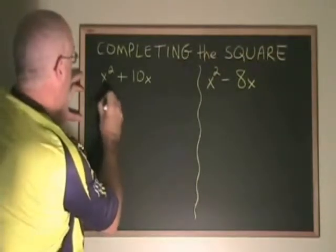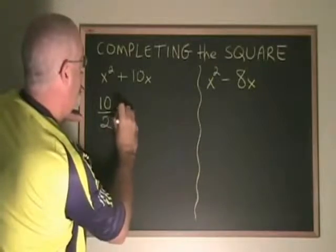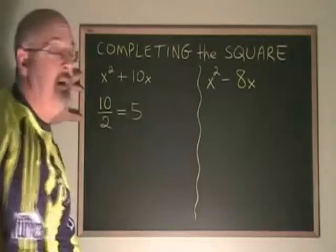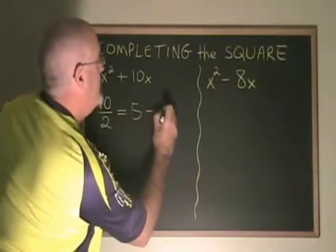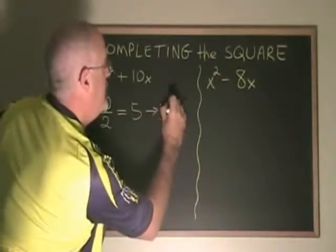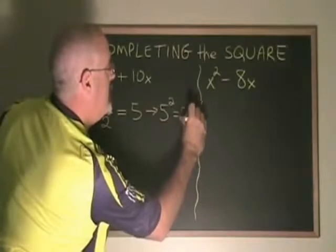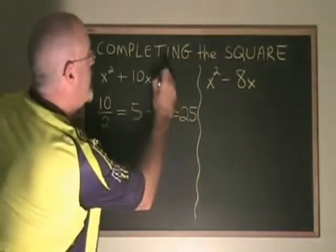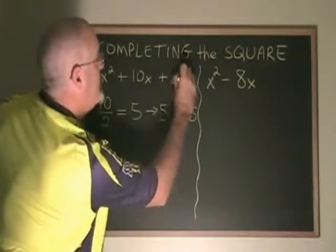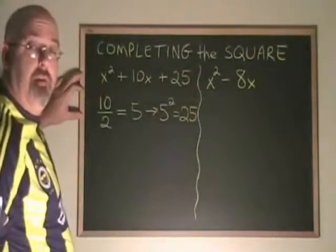If I take the coefficient of x, which in this case is 10, and I divide it by 2, then I take the answer, 5, and I square it. I get 25, and that is the number that I can put in this position to create a perfect square trinomial.